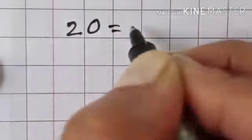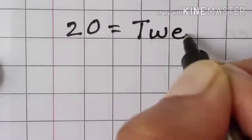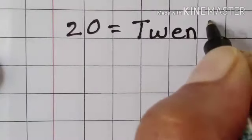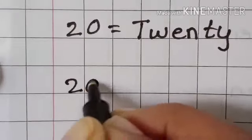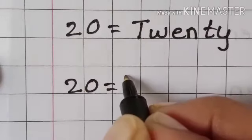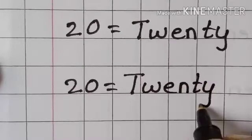Twenty. What is the spelling of twenty? T W E N T Y. Twenty. What is the spelling of twenty? T W E N T Y. Twenty.